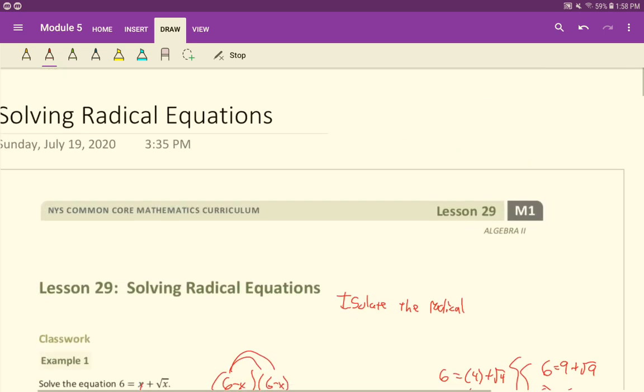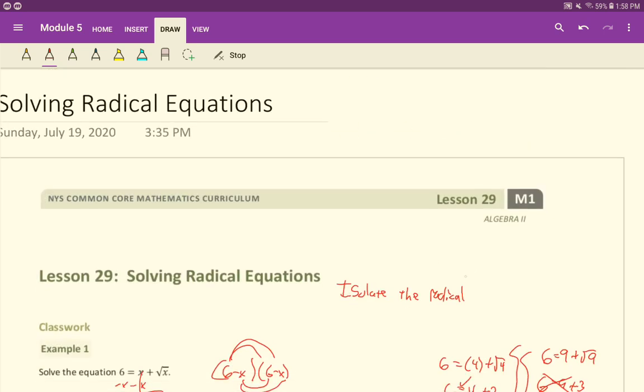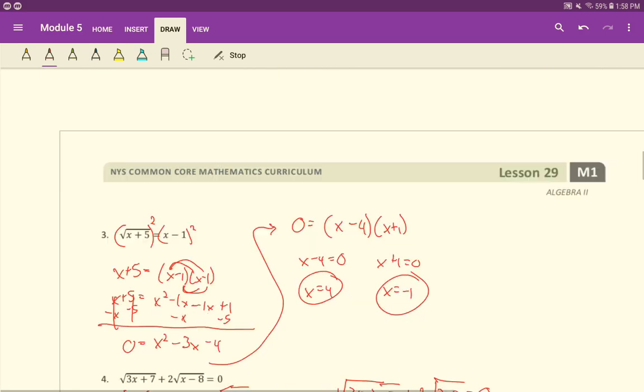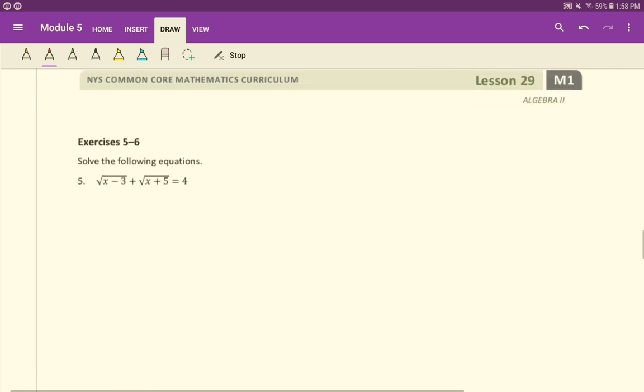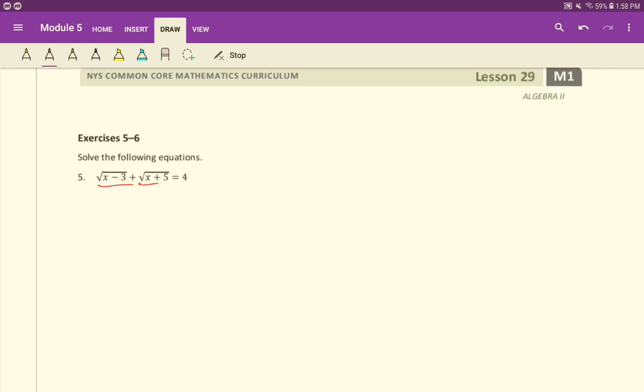Okay, again, same strategy applies as we have been looking at in the earlier problems, where we're just going to isolate the radical and square both sides and solve. So here again, two radicals. You can isolate whichever one you want.